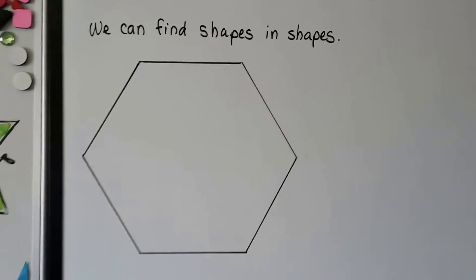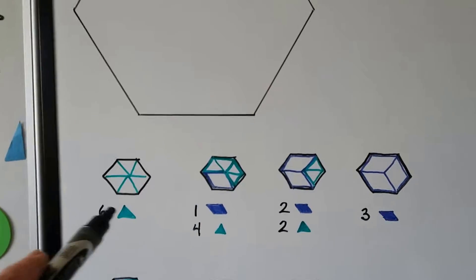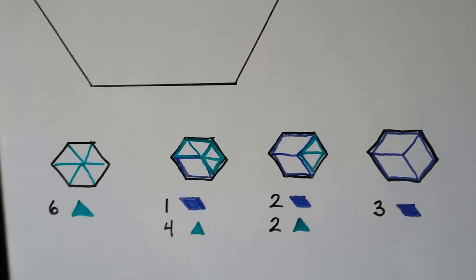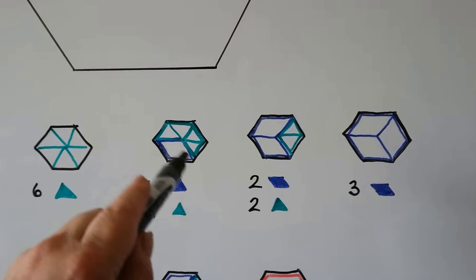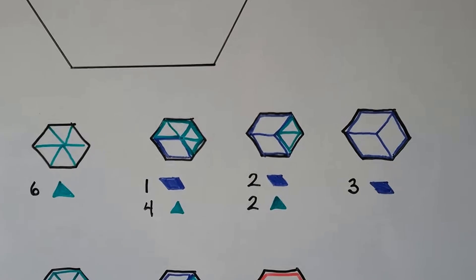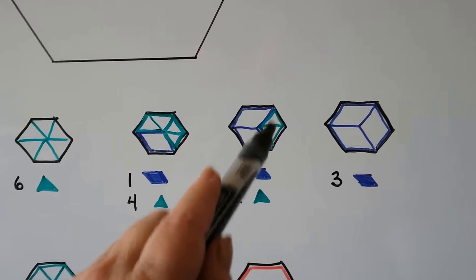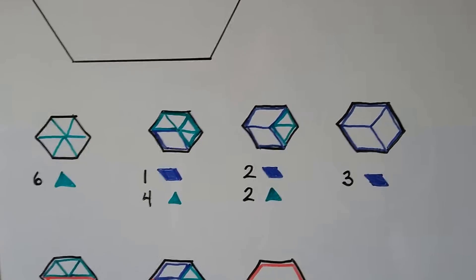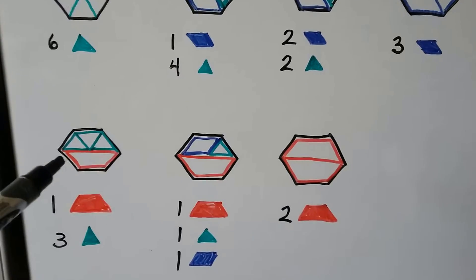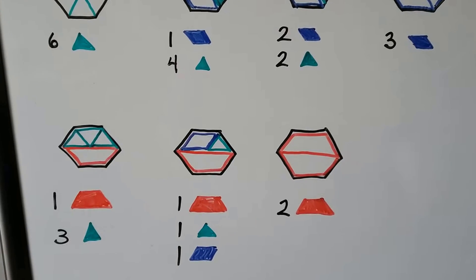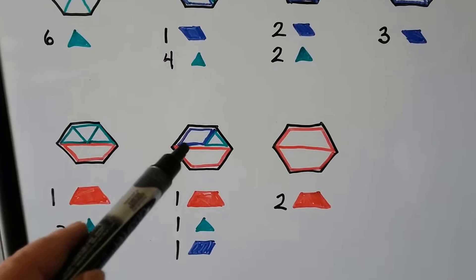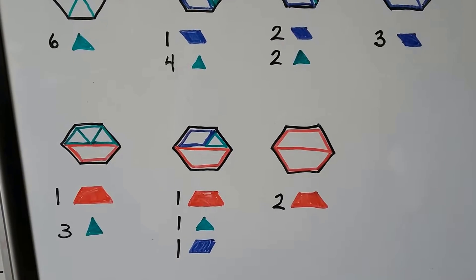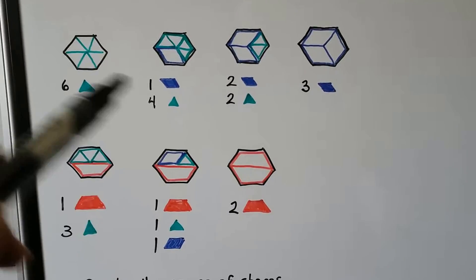We can find shapes in shapes. Here we have a big hexagon and we can find six triangles inside of it. We could also find one rhombus and four triangles, or two rhombuses and two triangles, or three rhombuses — kind of looks like a 3D cube. We could put a trapezoid and three triangles to make the hexagon, or a trapezoid, a rhombus, and a triangle, or two trapezoids.